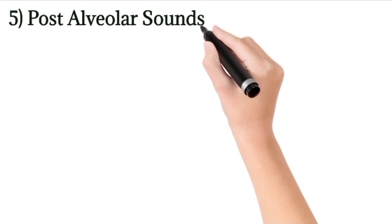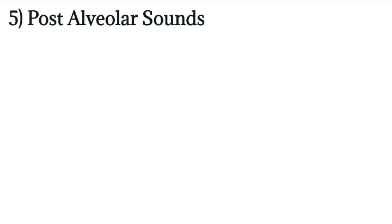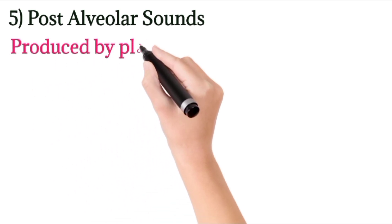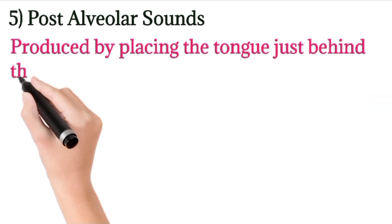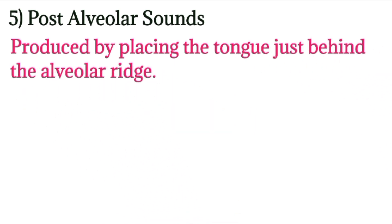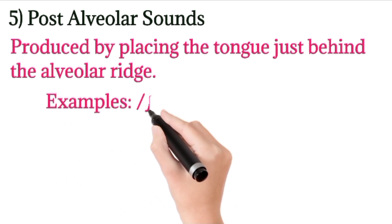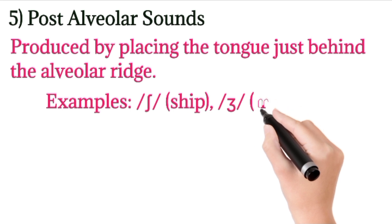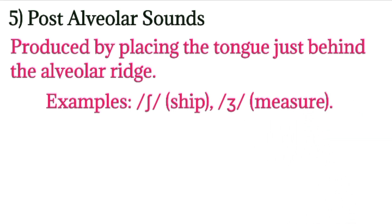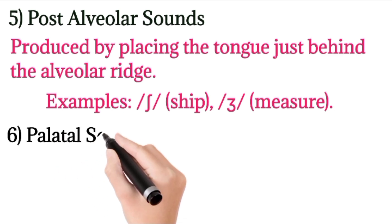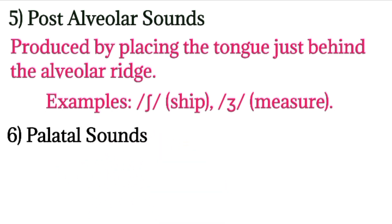The fifth place is post-alveolar sounds. 'Post' means behind, so these are sounds produced from the area which is behind the alveolar area. The definition is: produced by placing the tongue just behind the alveolar ridge. Sounds produced when the tongue is just behind the alveolar ridge are known as post-alveolar sounds.